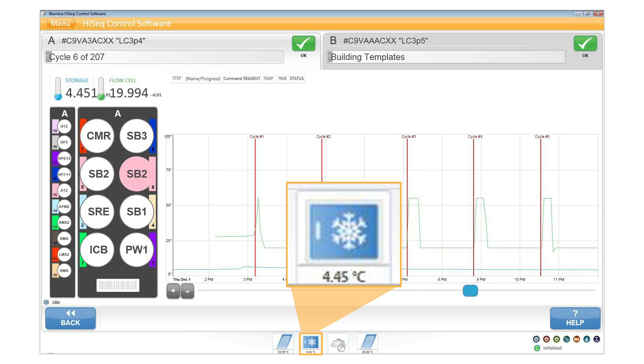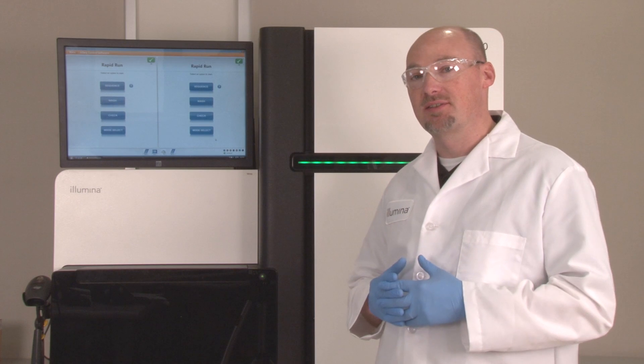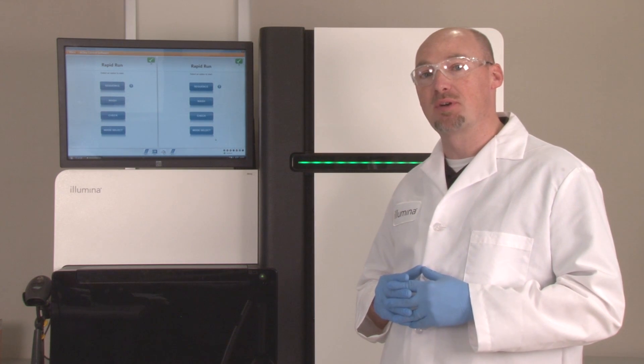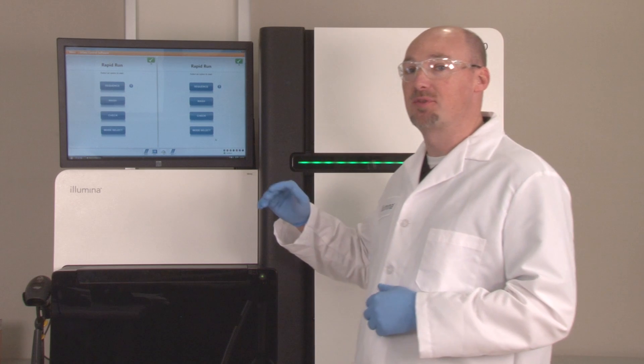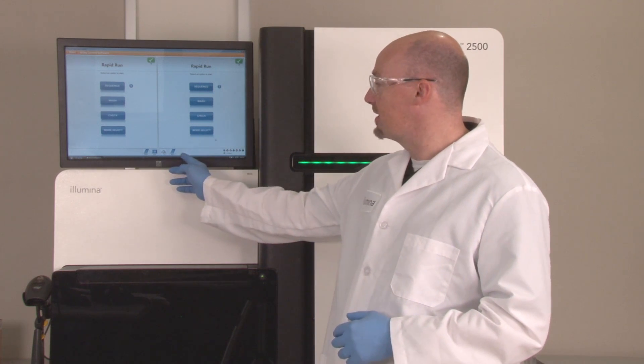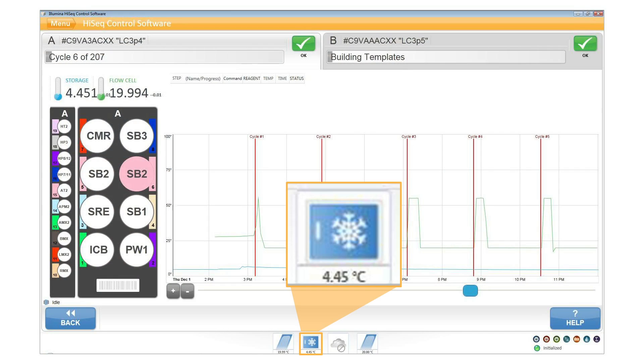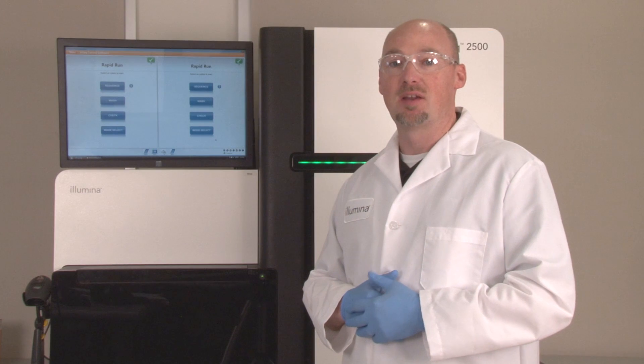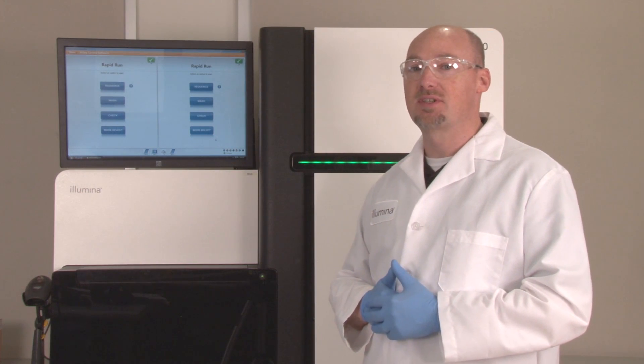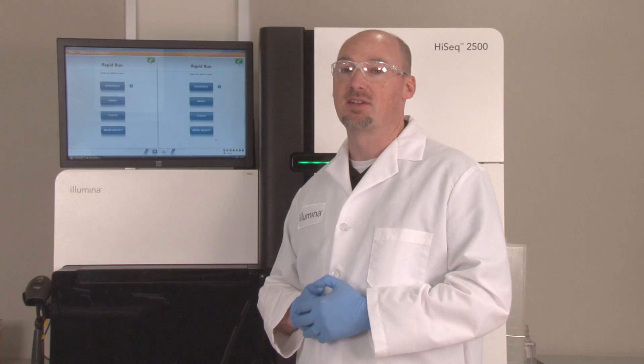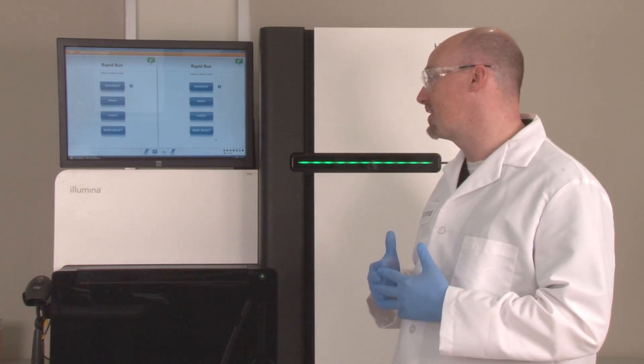While the instrument is running, make sure to monitor the chiller temperature. There is no high temperature warning message, so contact your Illumina support team if you see the chiller temperature rise above 7 degrees Celsius for an extended period of time. The temperature will spike when the door is open, but it should quickly return to expected temperature range of between 4 and 7 degrees Celsius.